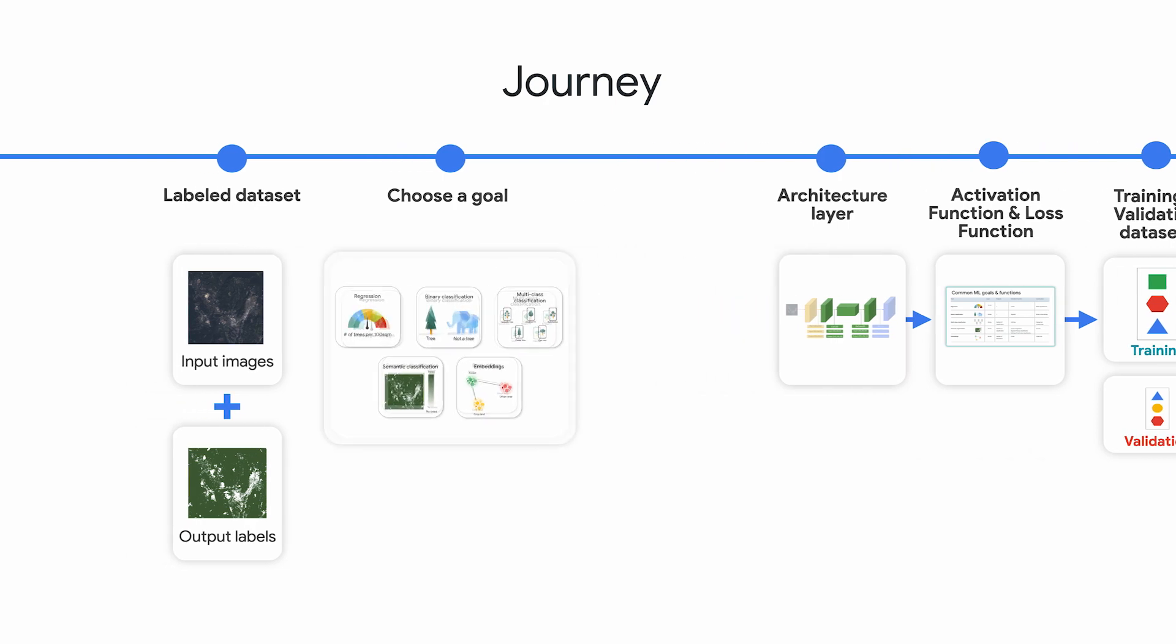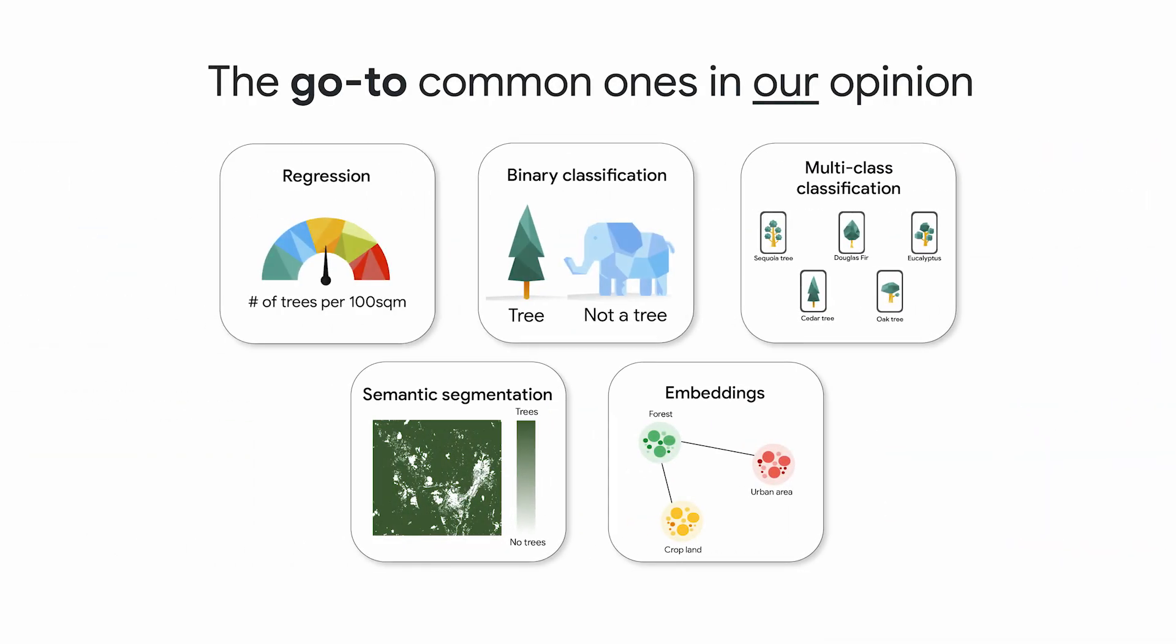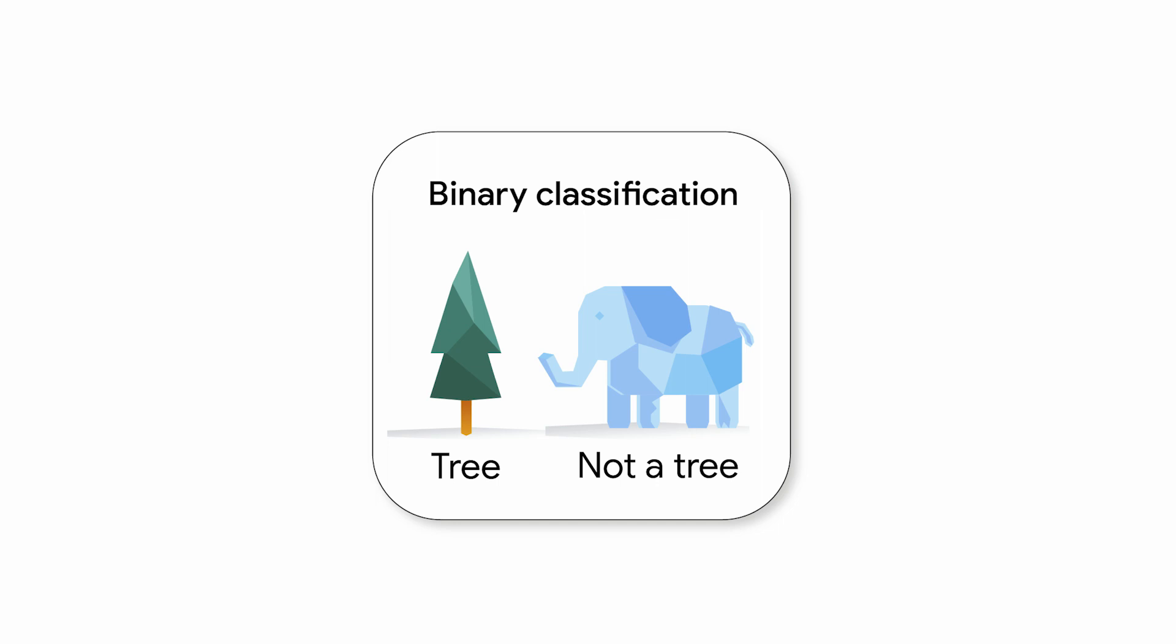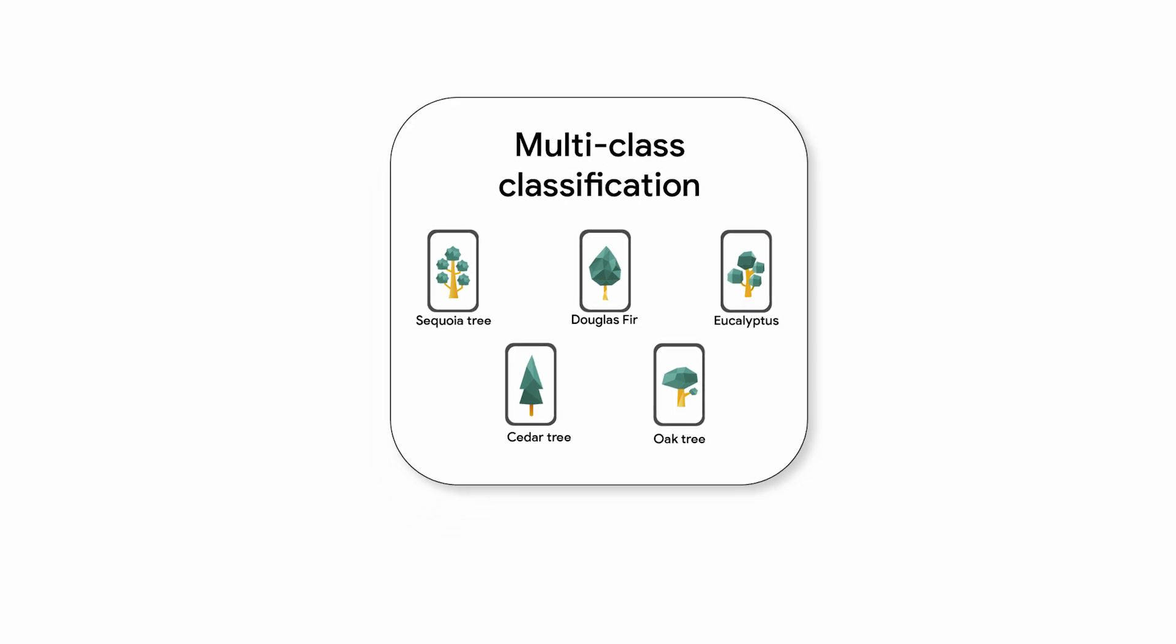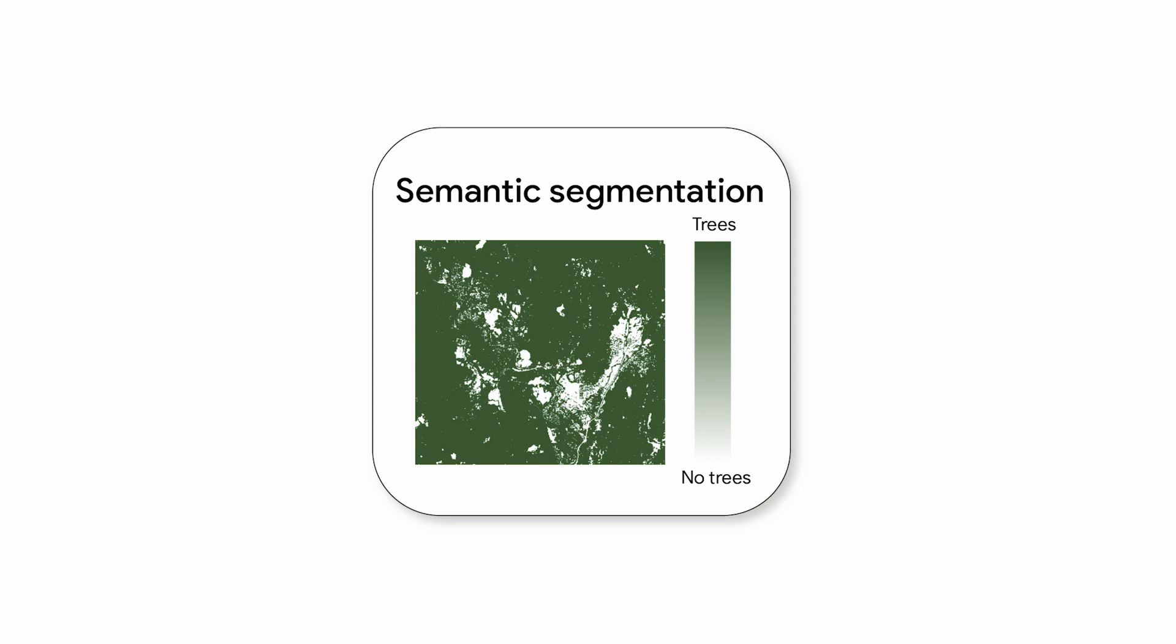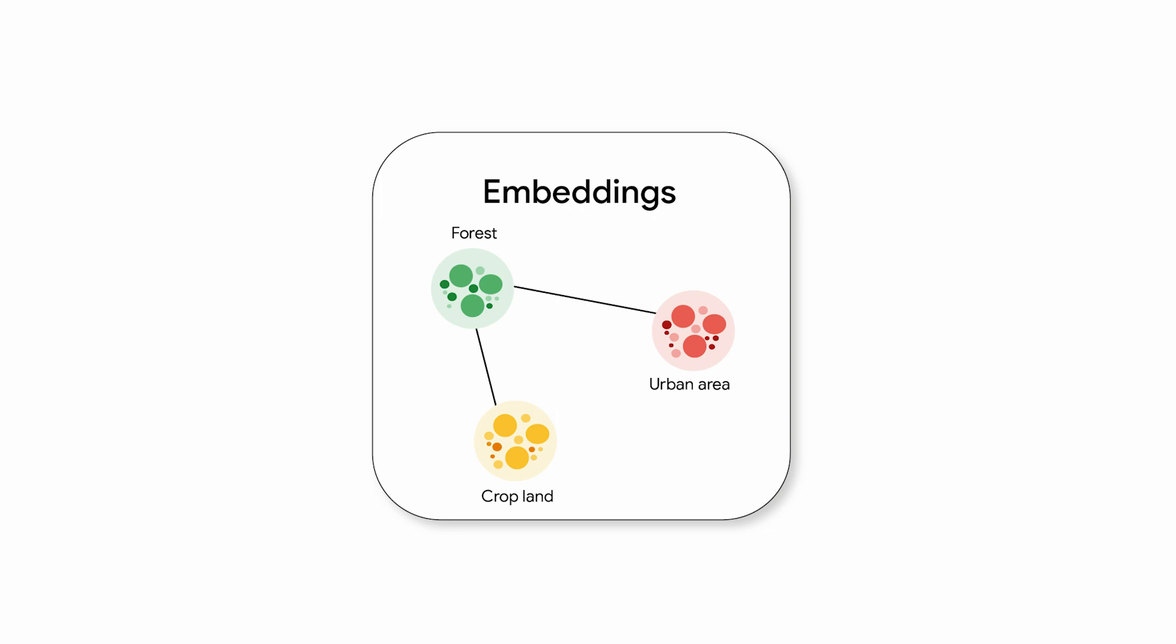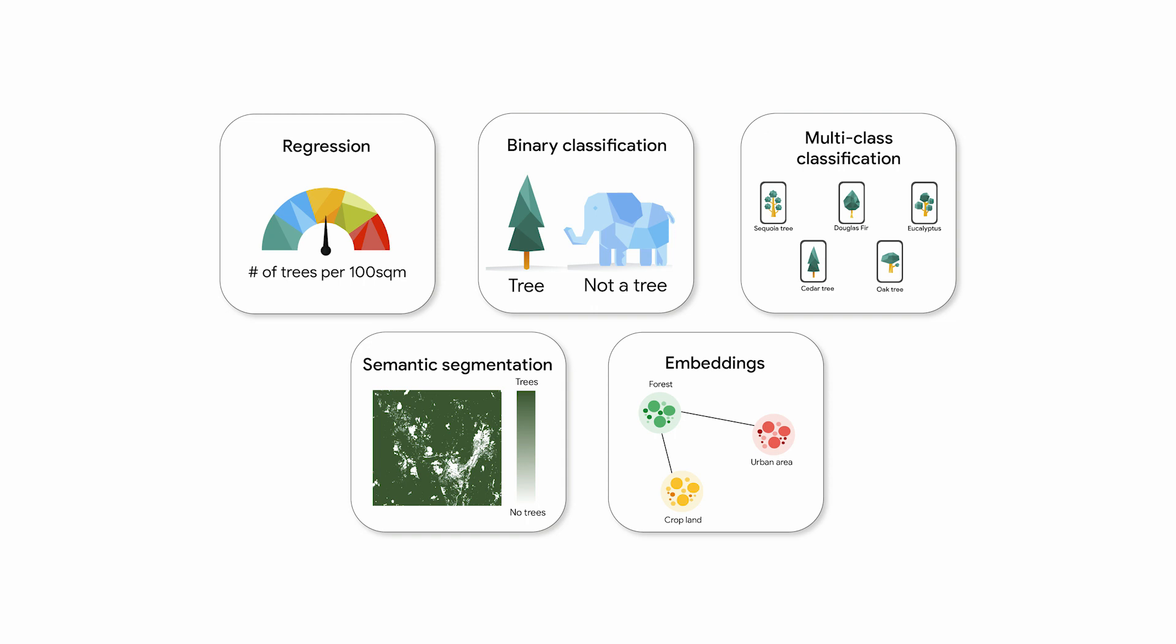We have to frame our model differently depending on our goal. Here are a few common goals. Regression, which predicts a number. Binary classification, which makes a prediction between two categories. Multi-class classification, which classifies things across multiple categories. Semantic segmentation, which classifies every pixel in an image. And embeddings, which groups similar elements into a multi-dimensional space. In our case, we simply want to know if there are trees or not for every pixel. So this would be a binary semantic segmentation problem.